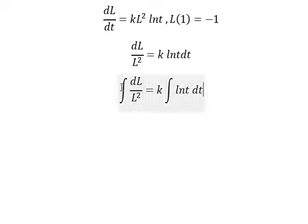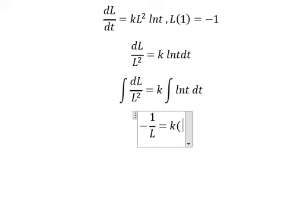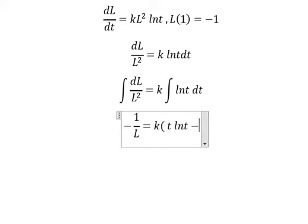Next, the integration of this one, we have negative 1 over L. So the integration of this one we can use integration by parts and we have t ln t minus t.